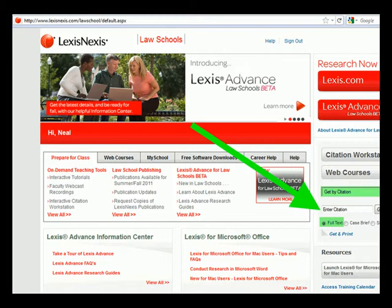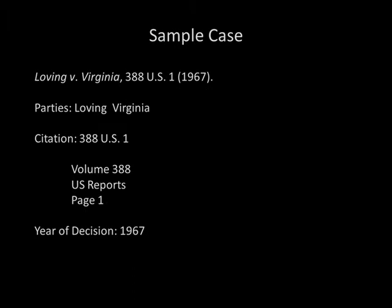By default it will retrieve the full text of the case. When we say retrieve by citation, here is a sample case. What you want to use is just the volume, the reporter, and the page. So in this case we will use 388 US 1 to retrieve the case, Loving vs. Virginia.